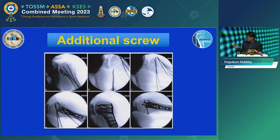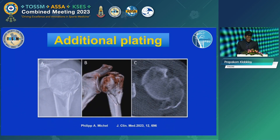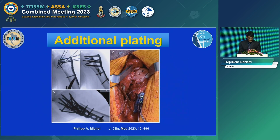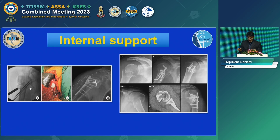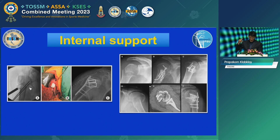For example, in one case they used extra-small screws to fix part of the articular surface and then applied a locking plate. For type 4 combined head-split fractures, an additional plate is used to help fix the articular part. For internal support, autograft such as iliac crest bone graft can be used — in one case two pieces of iliac crest bone graft were placed into the defect. Some surgeons also use a cage to maintain the metaphysis.